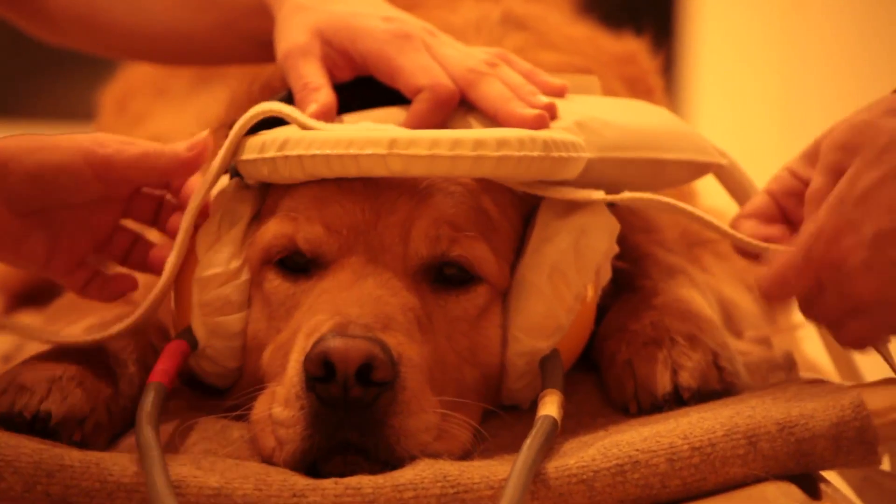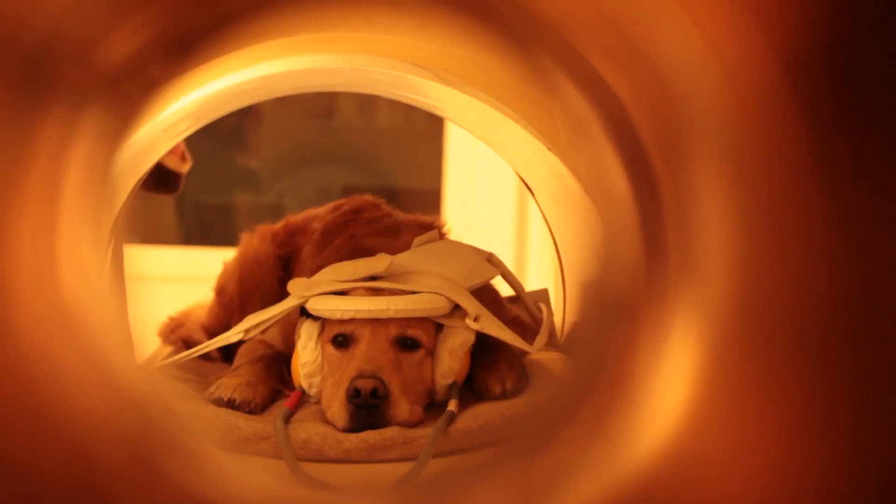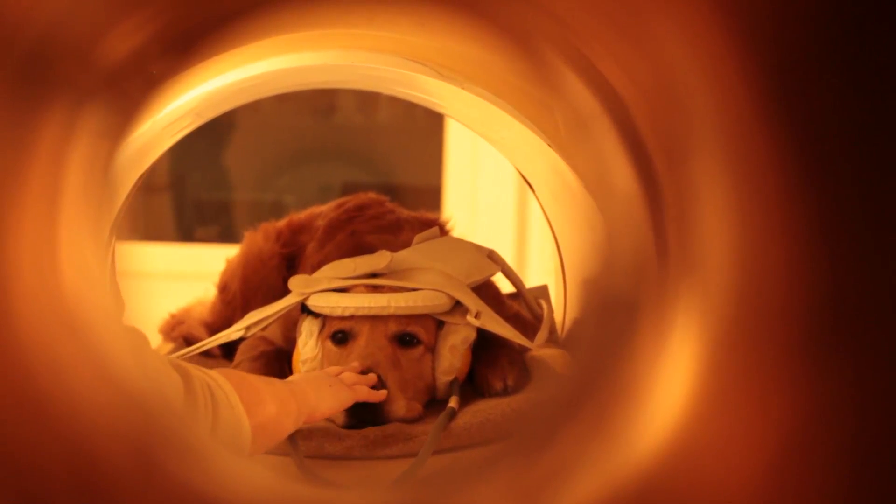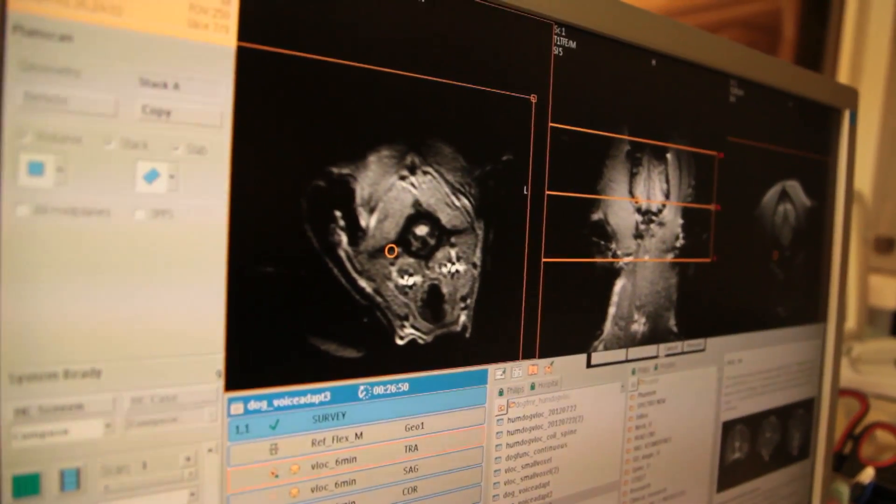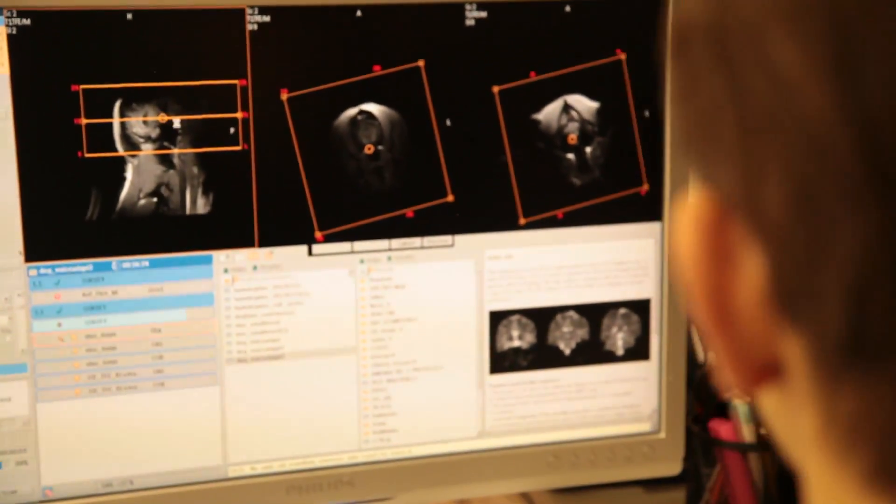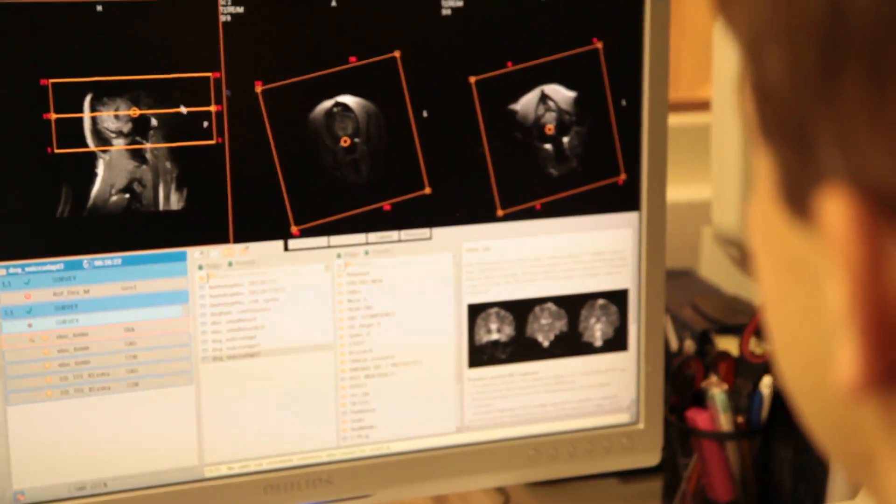Dogs have dedicated voice areas in their brains just as people do. Voice area of the dog responds more strongly to dog sounds, and voice area of the human brain responds more strongly to human sounds. Voice areas are located very similarly in the dog and human brain. This means that these areas evolved at least 100 million years ago, the age of the last common ancestor of humans and dogs.